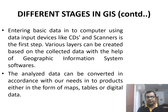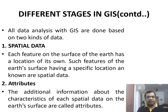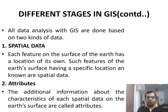All data analyses are done based on two kinds of data. The first one is spatial data. Each feature on the surface of the earth has a location of its own. Such features of the earth surface have a specific location known as spatial data. The second kind of data is attributes — the additional information about the characteristics of each spatial data on the surface are called attributes.